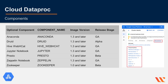When you create a cluster, standard Apache Hadoop ecosystem components are automatically installed. Additional components can be installed with initialization actions or directly on the cluster, which helps with speed, better compatibility, and deeper integration. The supported components are Anaconda, Druid, Hive, Jupyter, Presto, Zeppelin, and Zookeeper. Some of these are in beta, alpha, or general availability, as you can see in the table.